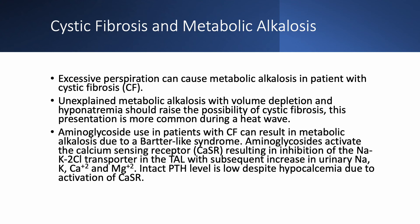Excessive perspiration can cause metabolic alkalosis in cystic fibrosis, especially presenting with metabolic alkalosis, volume depletion, and hyponatremia during a heat wave. Aminoglycosides in patients with cystic fibrosis can cause Bartter-like syndrome by activating the calcium-sensing receptor, suppressing PTH, and increasing urinary sodium, potassium, chloride, and magnesium — exactly like a loop diuretic. Activating the calcium-sensing receptor inhibits the sodium-potassium-2-chloride transporter in the thick ascending limb, mimicking loop diuretic use.